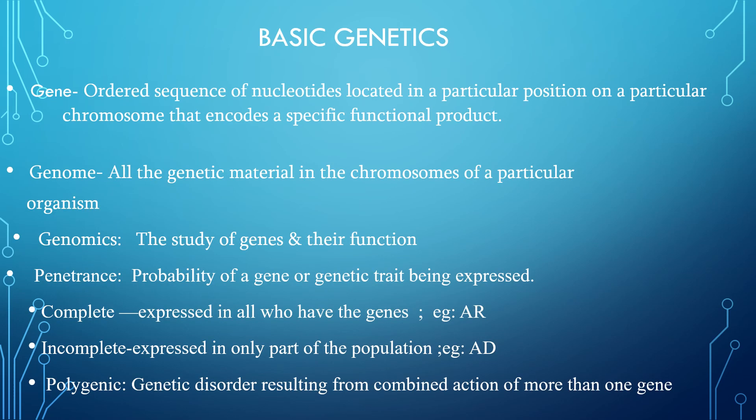Basic genetics: Genes are an ordered sequence of nucleotides located at a particular position on a particular chromosome that encodes a specific functional product. Genome is all the genetic material in the chromosome of a particular organism. Genomics is the study of genes and their function. Penetrance is the probability of a gene or genetic trait being expressed, which is of two types: complete and incomplete. Complete penetrance is expressed in all who have the gene, for example autosomal recessive. Incomplete penetrance is expressed in only part of the population, for example autosomal dominant. Polygenic refers to a genetic disorder resulting from the combined action of more than one gene.